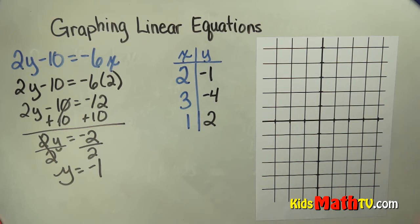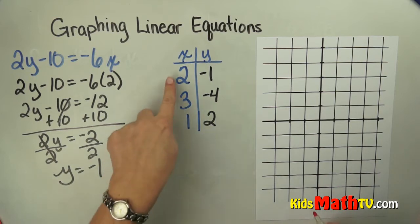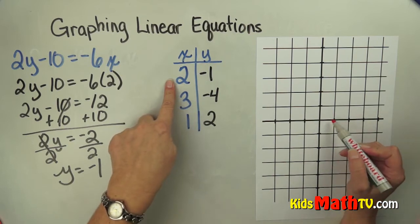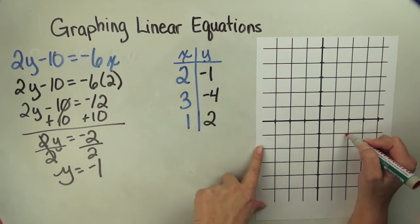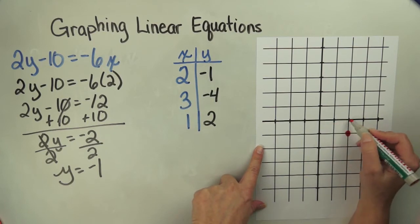Then what I can do is plot those on our graph. So 2 is on my x-axis, I go over 2. Negative 1 means I go down 1. And that's my point: 2, negative 1.